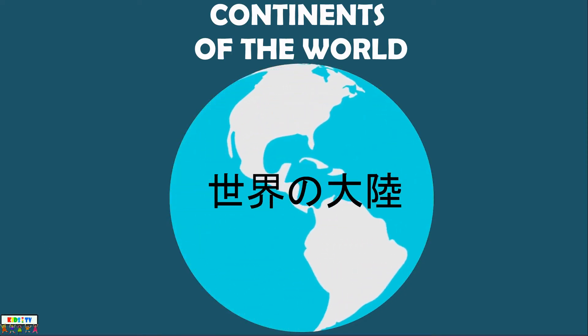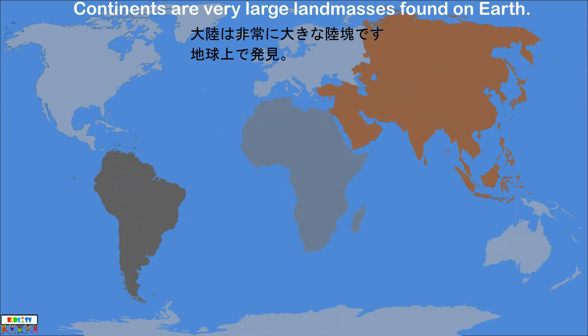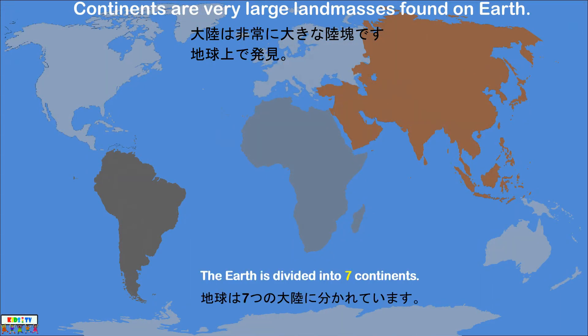Continents of the World. Continents are very large land masses found on Earth. The Earth is divided into seven continents.